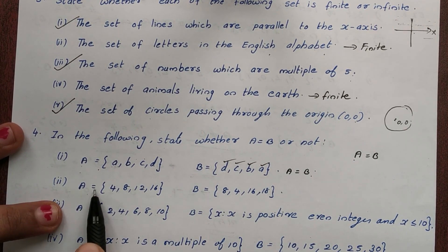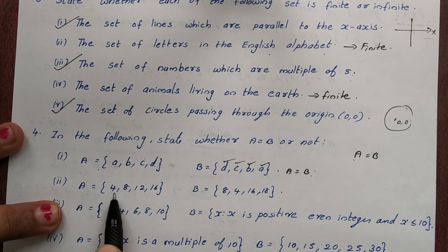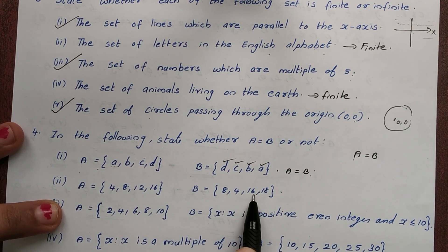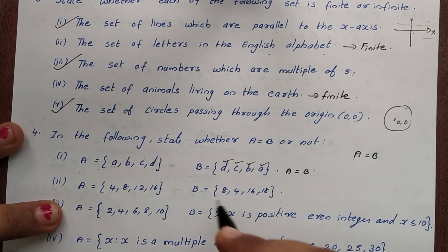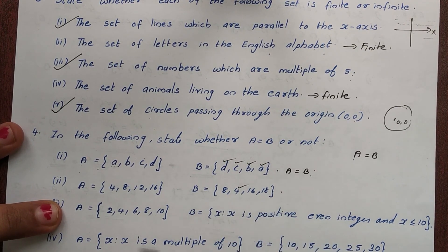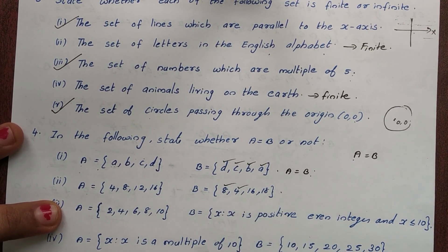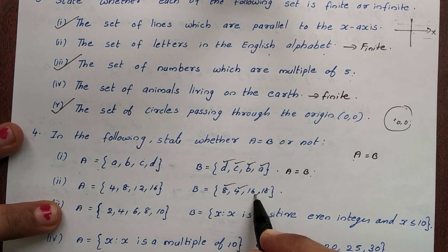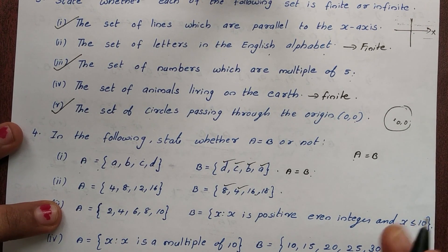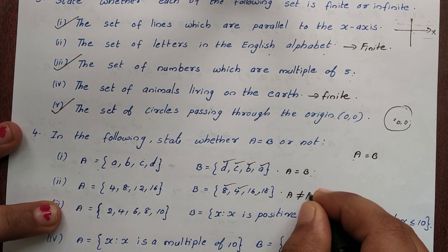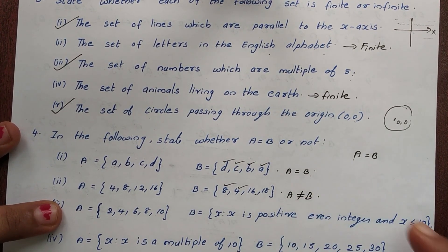Second question: A = {4, 12, 16} and B = {4, 16, 18}. Comparing elements: A has 12 but B has 18 instead. Different elements, so A is not equal to B.